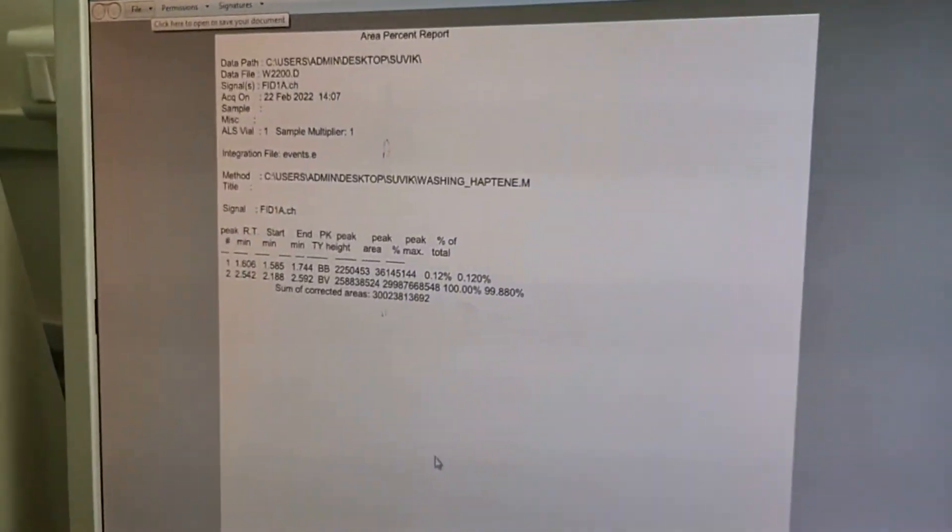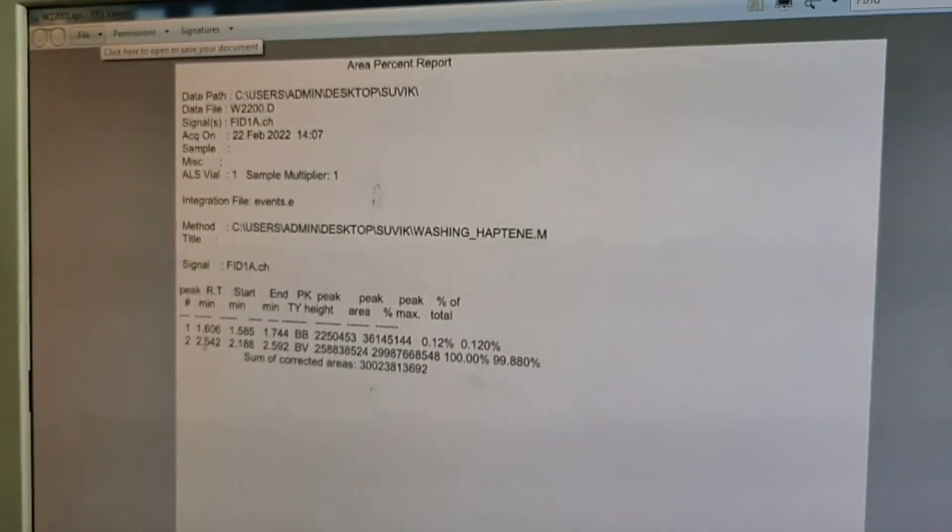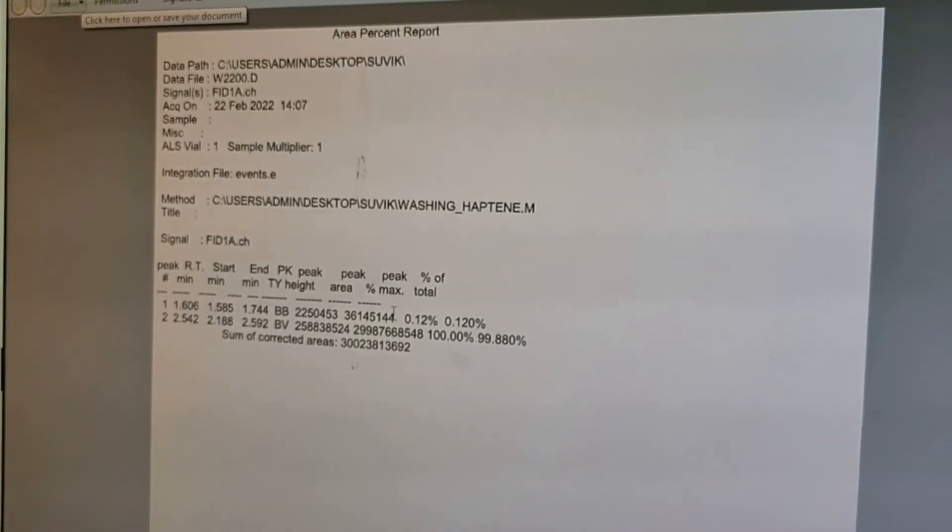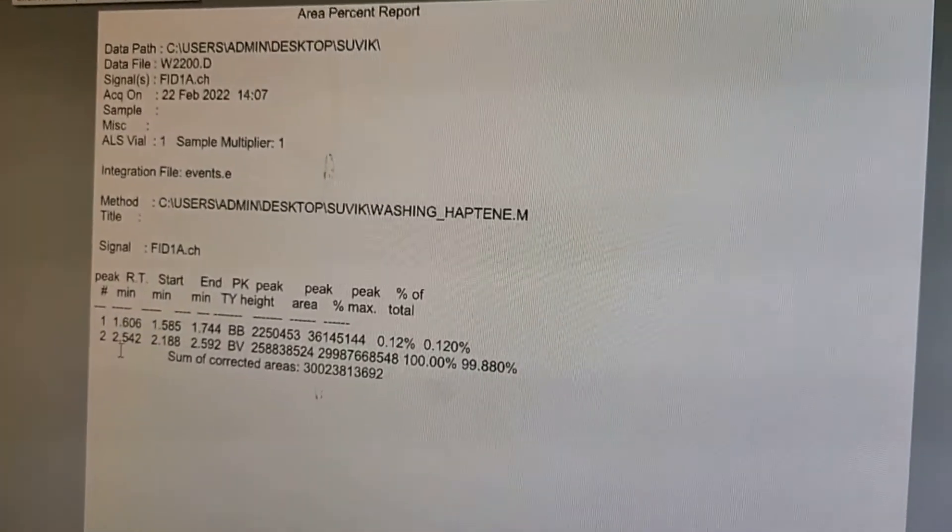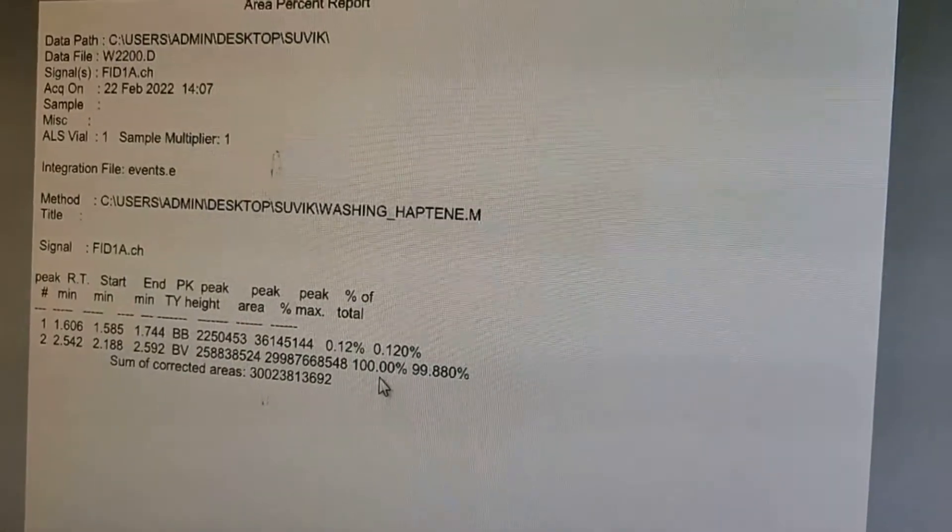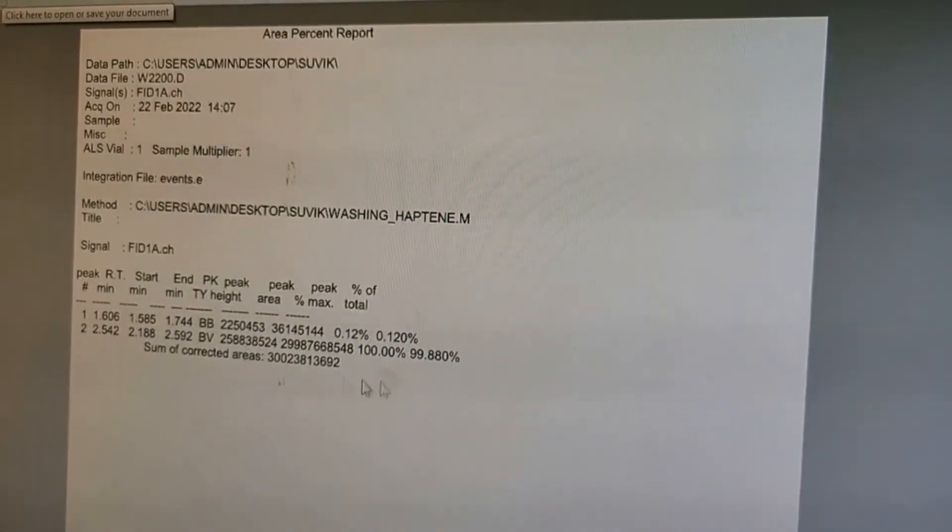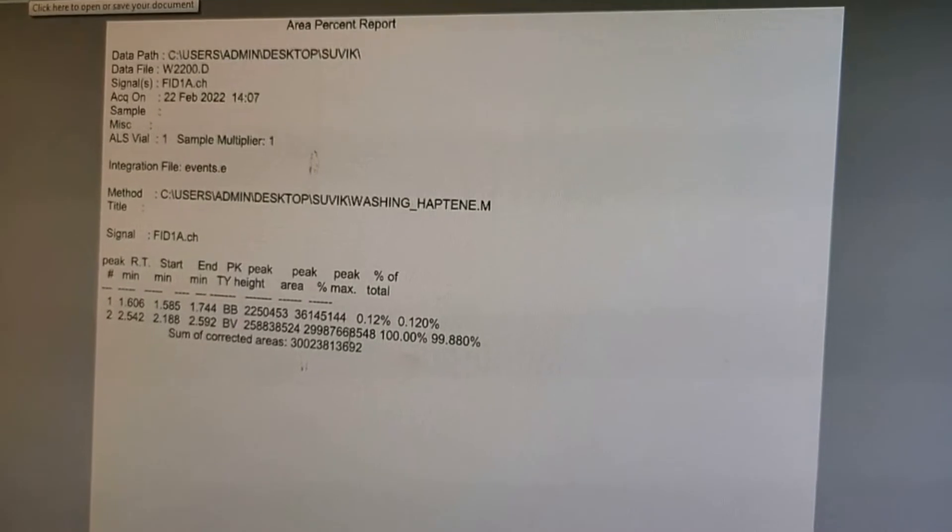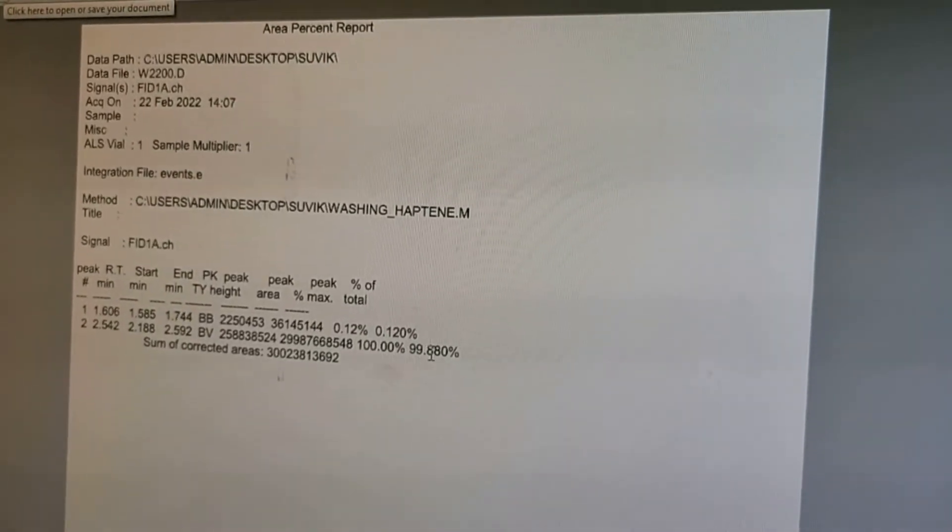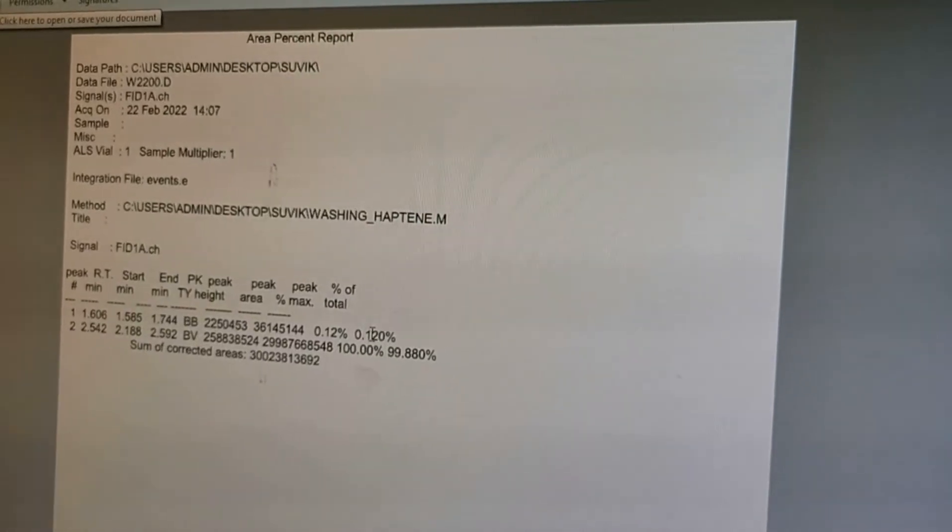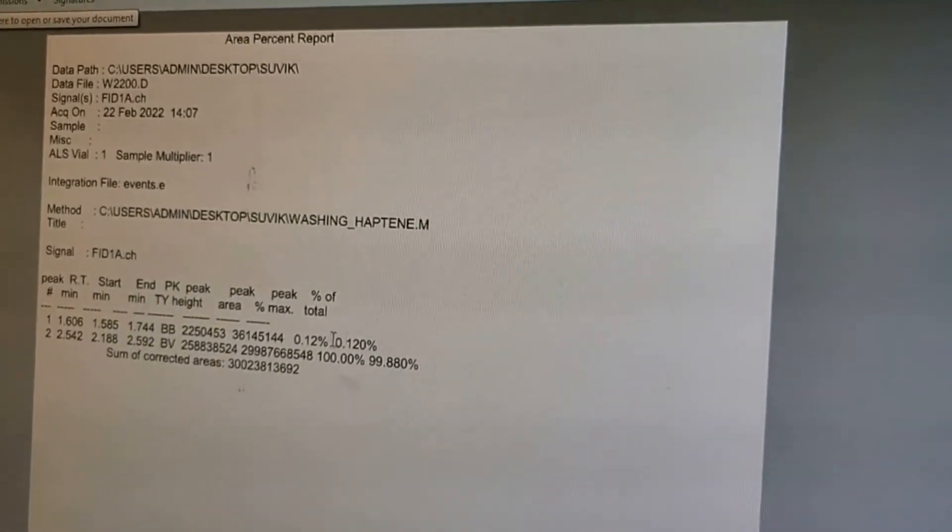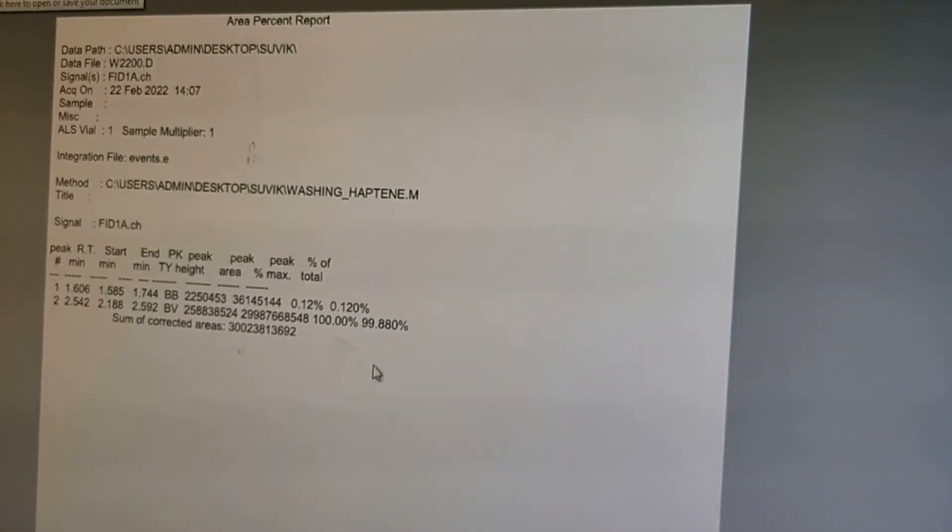Now our result is generated. Now you can see here we detect the 2 peaks. One at the retention time 1.606 and one is 2.542. The 100 percent our sample is methanol. So you can see here methanol peak is giving 99.8880, is the pure form we get it, and the other some traces are detected.